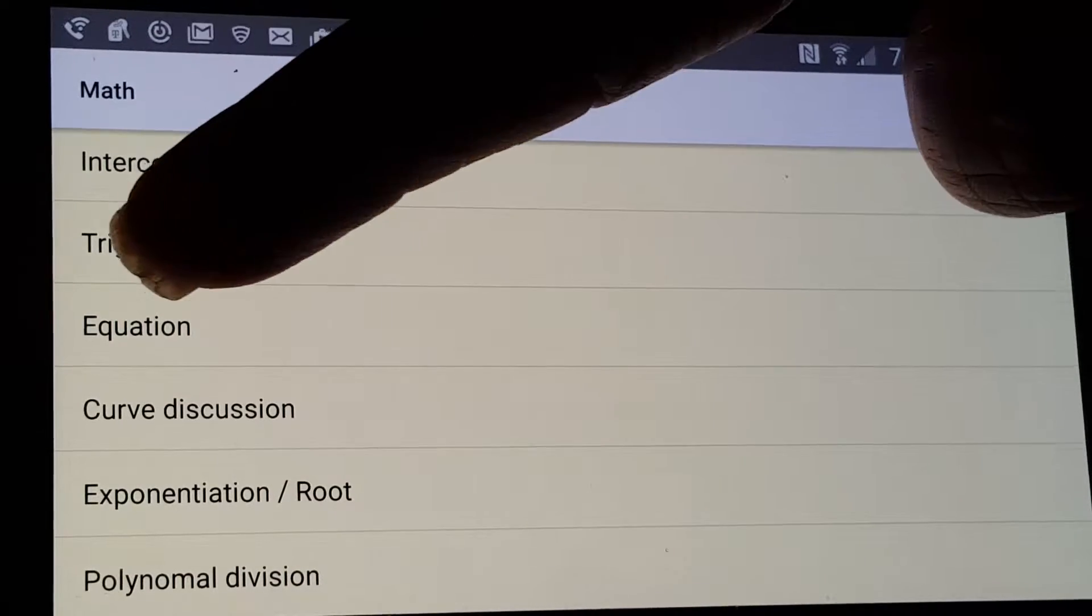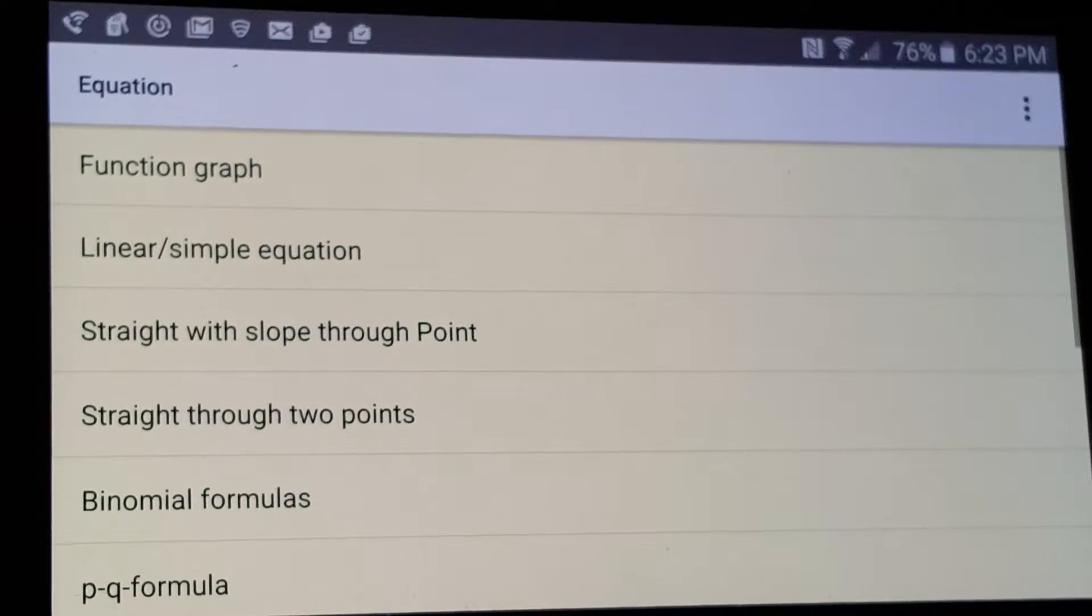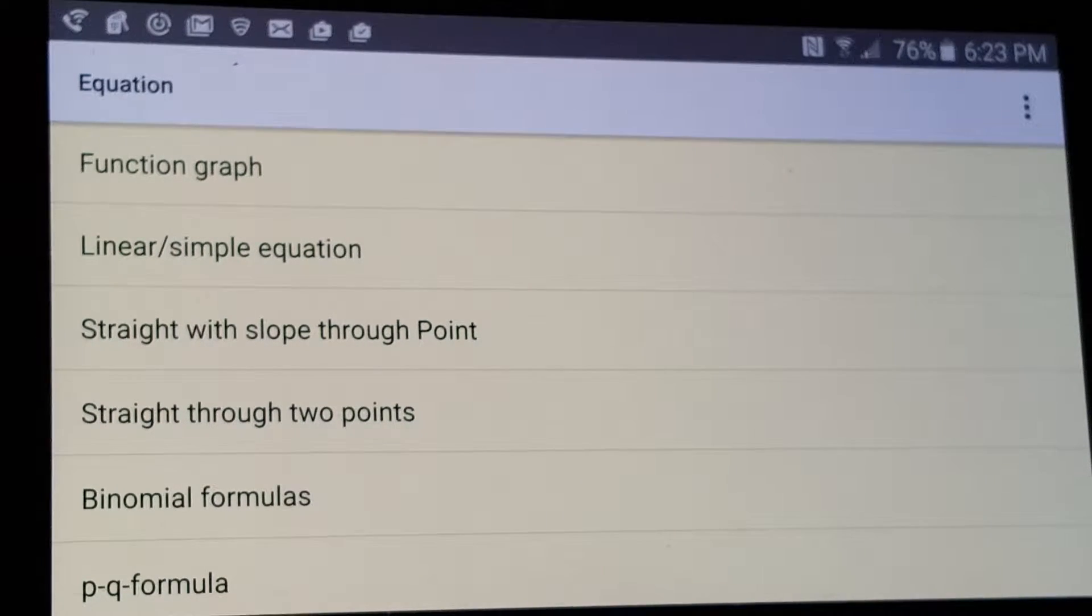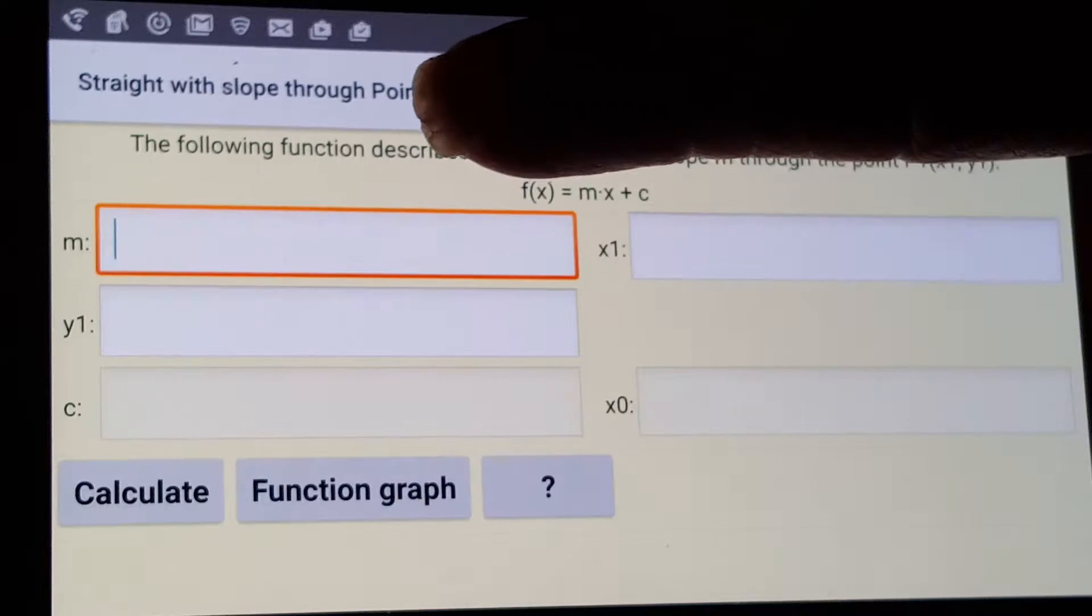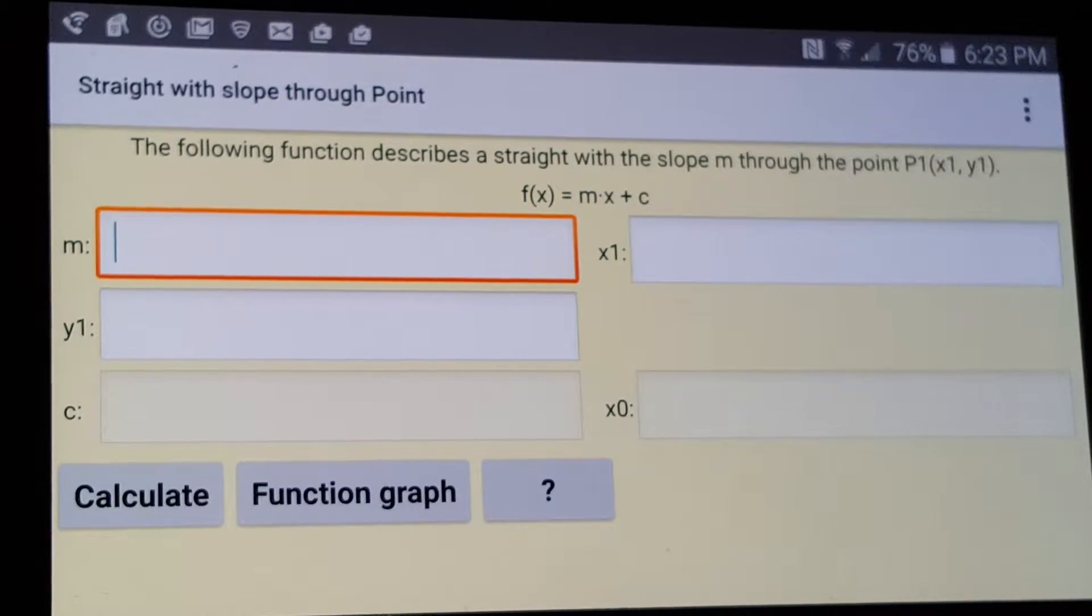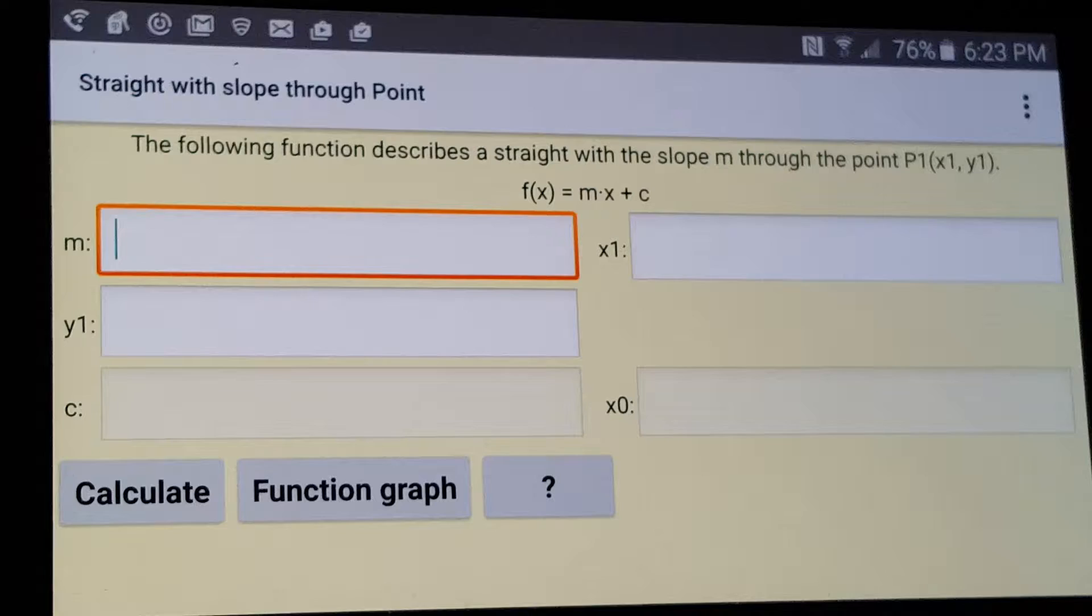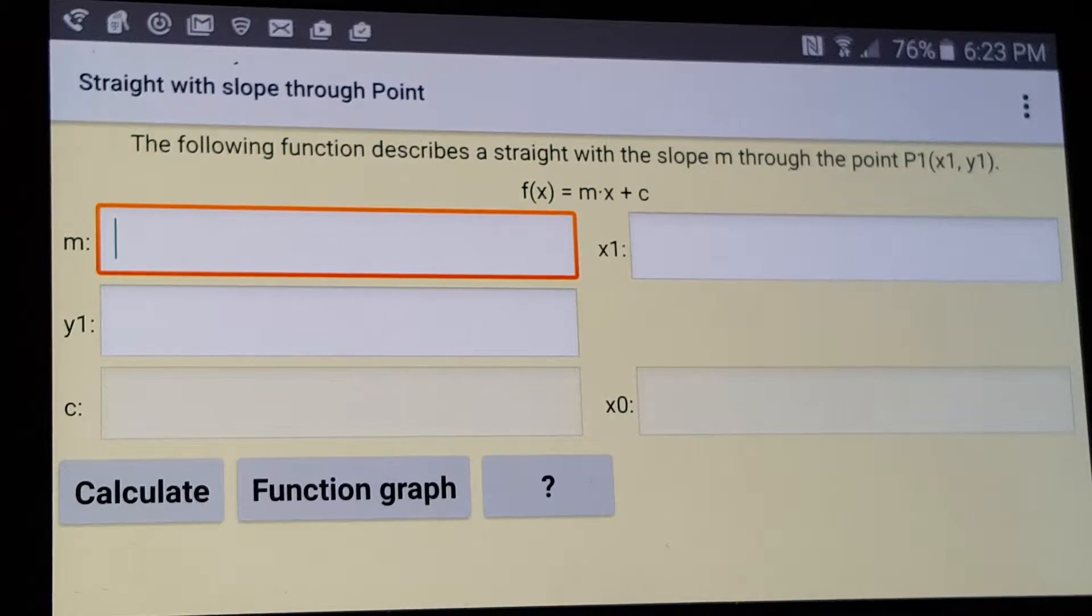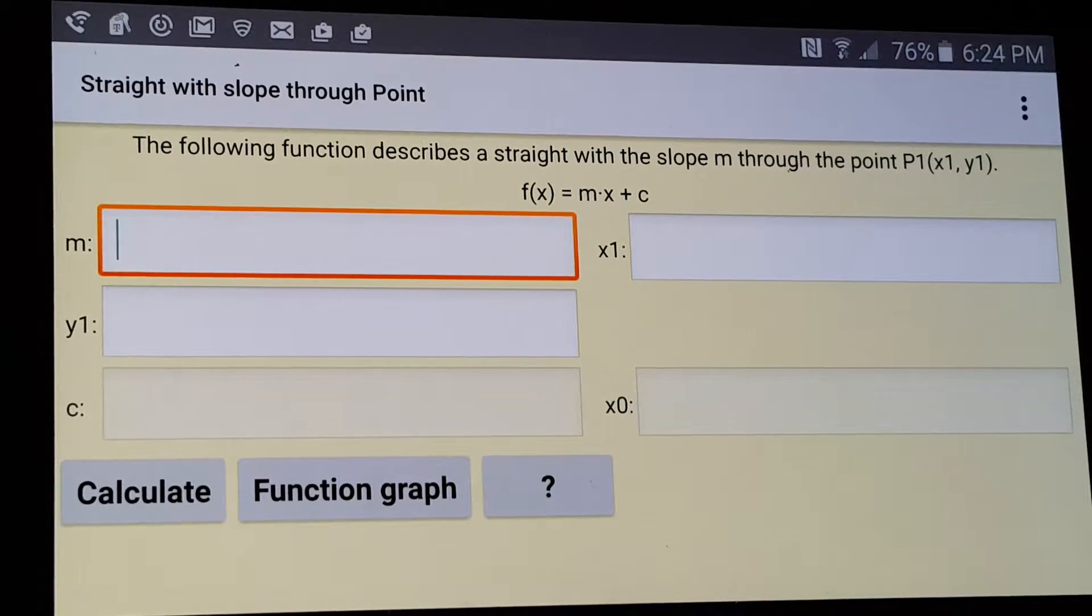So we'll tap equation here, and we're going to go with the straight with slope through point. And when you get on this, please notice that at the top of the screen you have your formula.